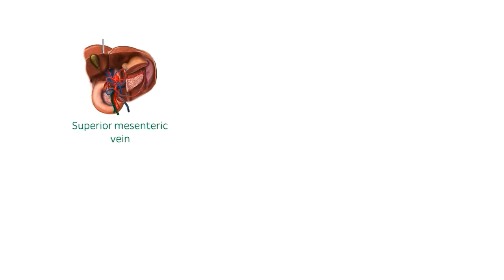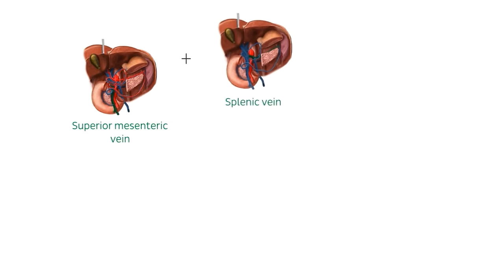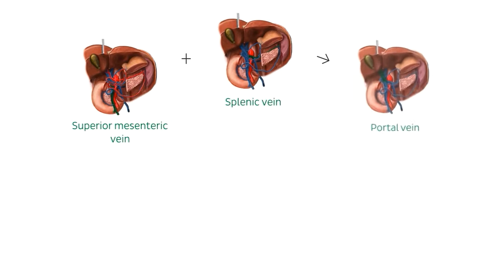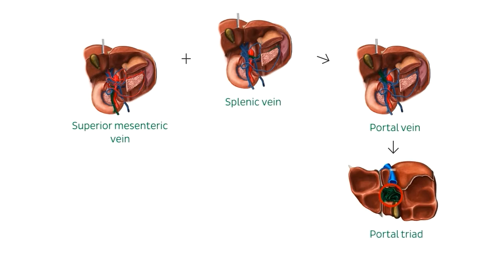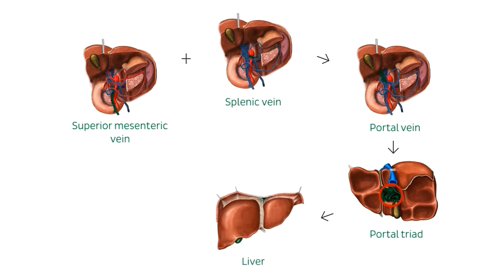Veins carry nutrient-rich blood from the gastrointestinal tract, such as the superior mesenteric vein and the splenic vein, which then carry blood to the portal vein itself, and then through the portal triad, which is a triad of structures found in the porta hepatis. Once in the liver, the blood is filtered of bacteria and toxins, which are eliminated through bile or urine, where the filtered blood is sent back to the inferior vena cava.